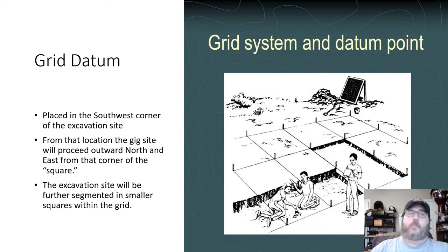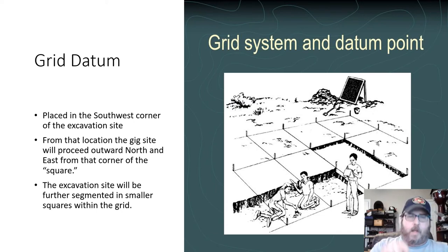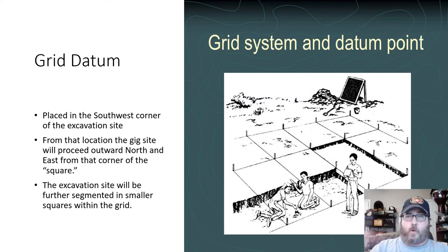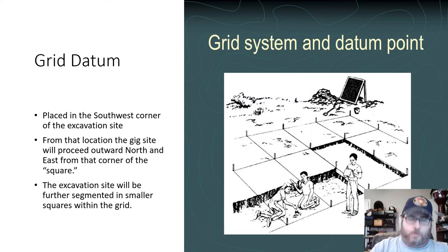If you've ever done x,y coordinates in mathematics, or any kind of graphing in high school — think about that x,y coordinate system. The cross in the center, the very dead center, 0,0 of that x,y coordinate map, is the position we're talking about. That's the grid datum, and it would be located in the southwest corner of our survey area. Meaning, on the entire x,y coordinate map, the datum point would be at the southwest corner — 0,0 — and everything else would be measured off from that position, proceeding outward from there.